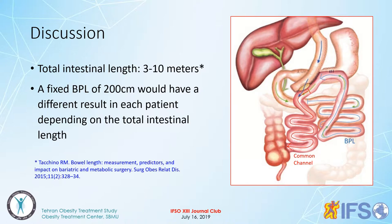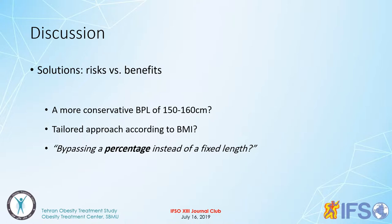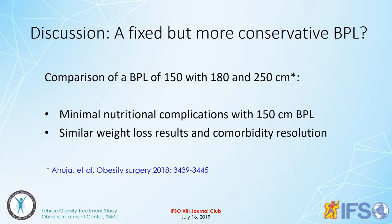According to Takino's paper, total intestinal length is between 3 to 10 meters. A fixed biliopancreatic limb of 200 centimeters would have different results in each patient depending on total intestinal length. What are the solutions for protein calorie malnutrition in OAGB/MGB? If surgeons find a good solution, MGB/OAGB may become one of the best bariatric operations in the future. We can choose one of three types: a more conservative biliopancreatic limb of 150–160 centimeters, a tailored approach by BMI, or bypassing a percentage of small intestine instead of a fixed length.